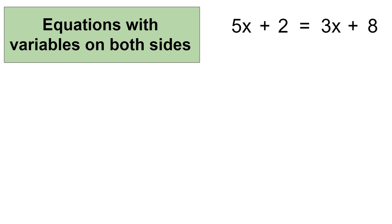Now, just as with one and two step equations, the goal is to isolate the variable, meaning we need to get the variable by itself. So in the end, we want to show what the variable is equal to.